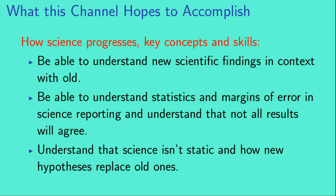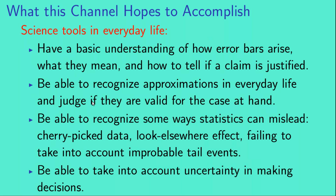As far as how science progresses, there are some key concepts and skills that we would like to convey. First, to be able to understand new scientific findings in context with old ones. Second, to be able to understand statistics and margins of error in science reporting, and understand that not all results are always going to agree with each other. And third, to understand that science isn't static and how new hypotheses come to replace old ones. As far as science tools in everyday life, it's important to have a basic understanding of how error bars arise, what they mean, and if somebody tells you that something is true, how to tell if that claim is justified. It's also important to be able to recognize approximations in everyday life and judge if they are valid for the case at hand.